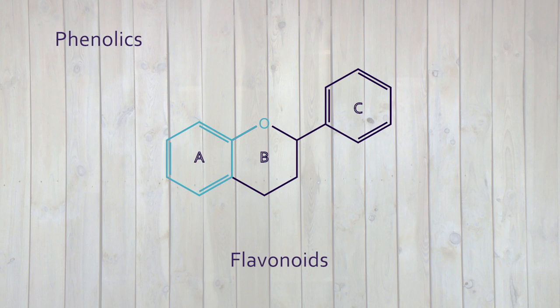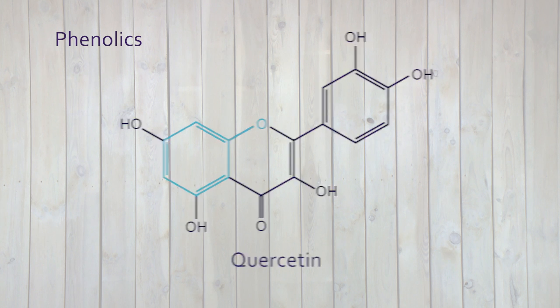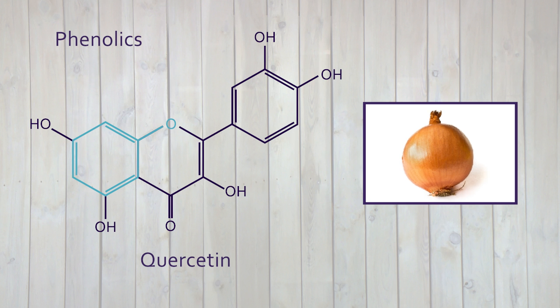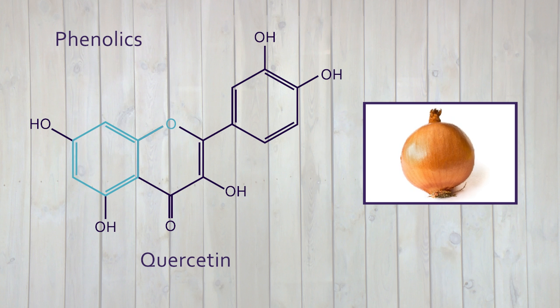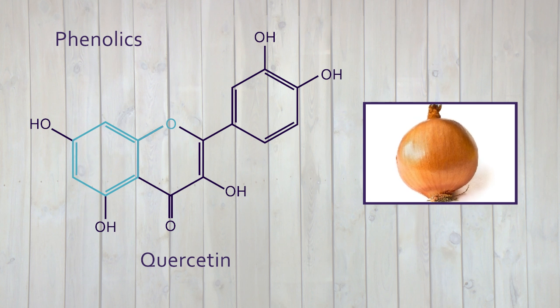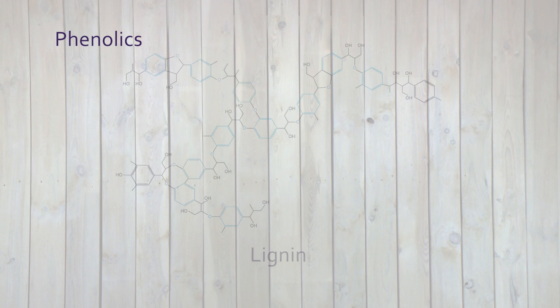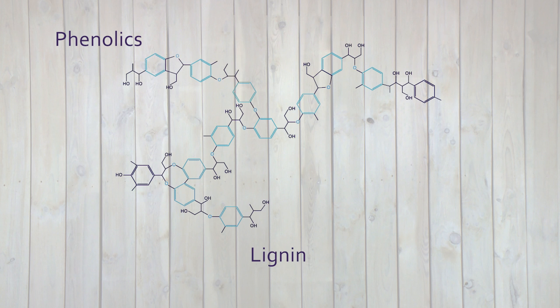Flavonoids are another group of well-known phenolic compounds that give colour to many plants. An example is quercetin from the onion, which can be used to dye textile.